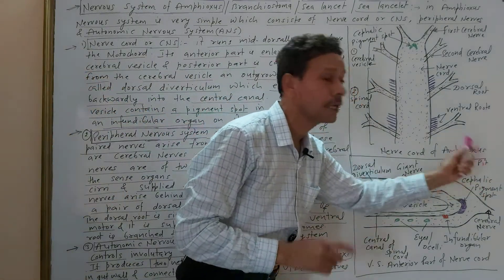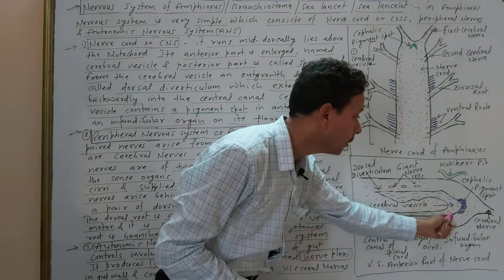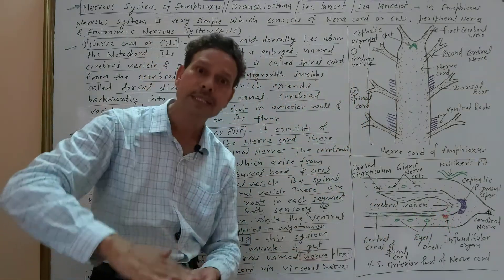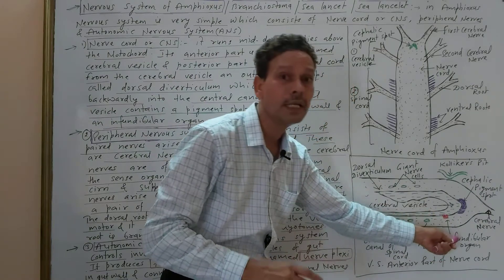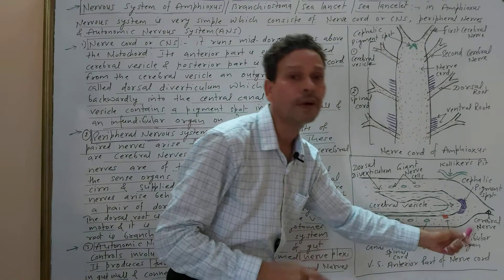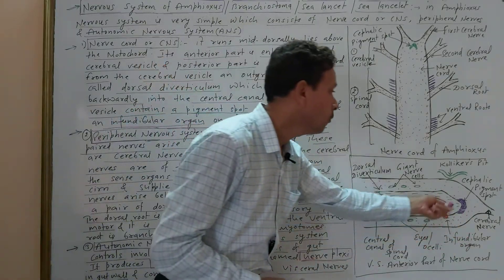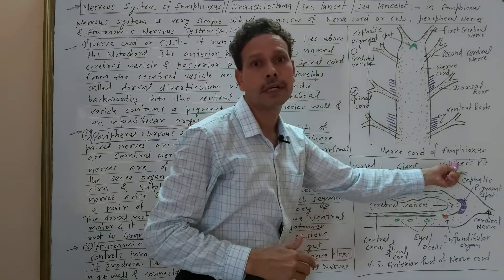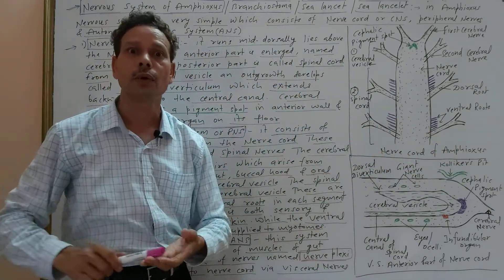This cephalic pigment spot is a sensory organ. At the floor of the cerebral vesicle, another sensory organ is present, which is very important for final exams — it is the infundibular organ. There is also a dorsal cavity called Kölliker's pit. All of these are sensory organs.